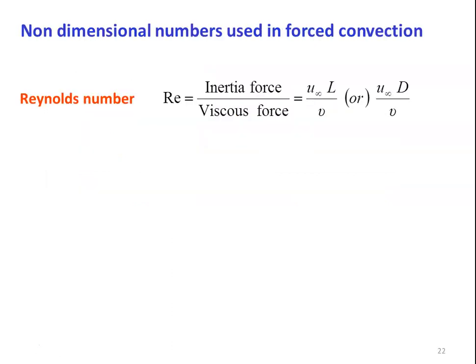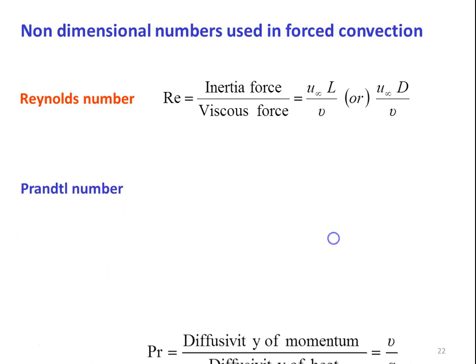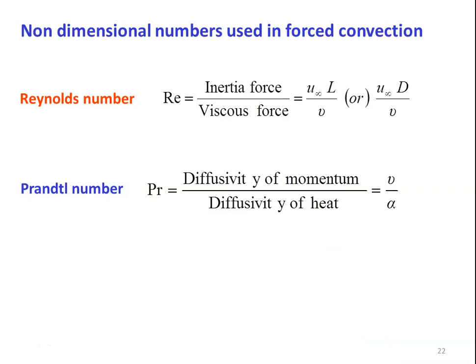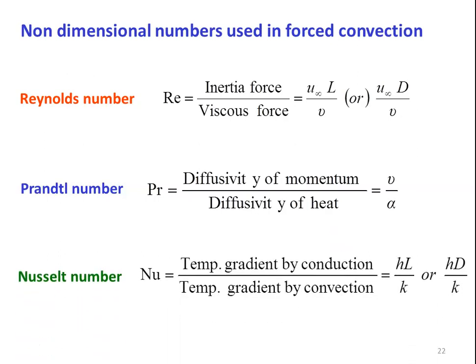There are three important non-dimensional numbers for forced convection calculations. The Reynolds number is the ratio of inertia force to viscous force: Re = UL/ν for a flat plate, or UD/ν for a cylinder or sphere. The Prandtl number is the ratio of momentum diffusivity to thermal diffusivity: Pr = ν/α. The Nusselt number is the ratio of temperature gradient by convection to that by conduction: Nu = HL/k for a flat plate, or HD/k for a cylinder or sphere.